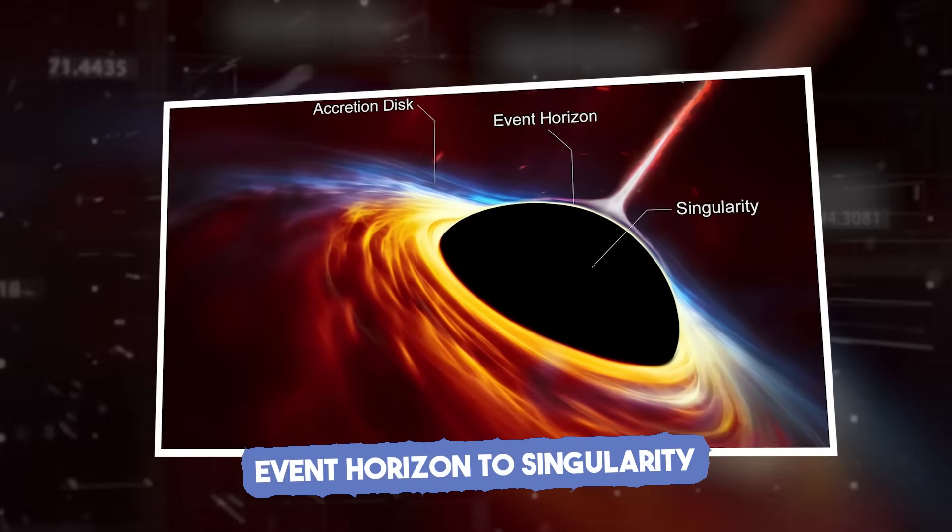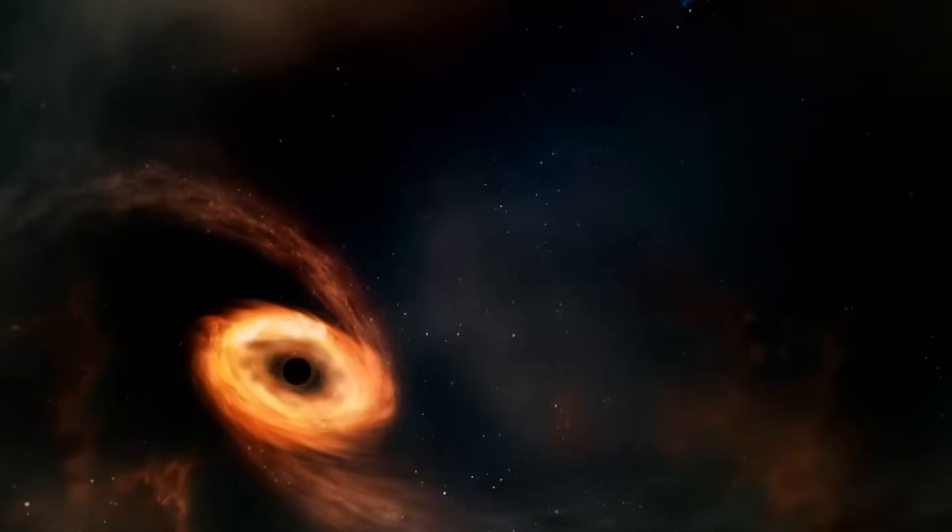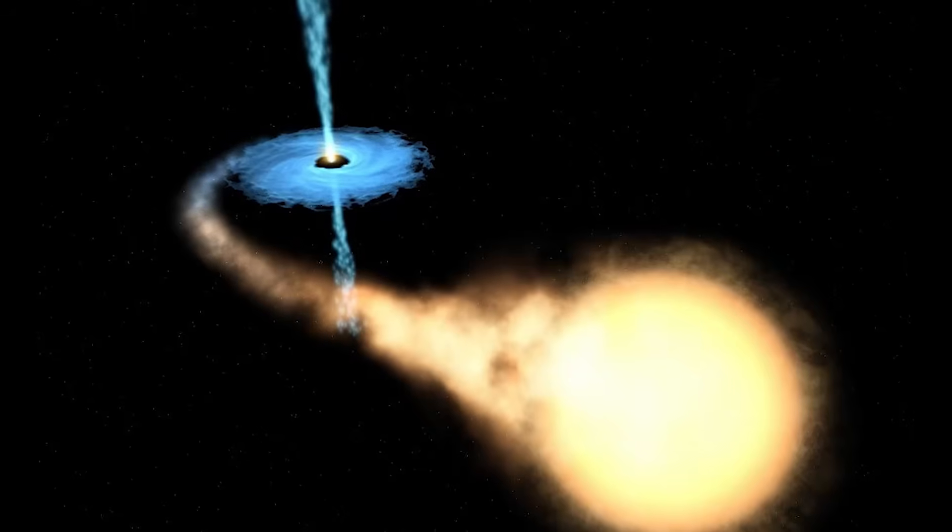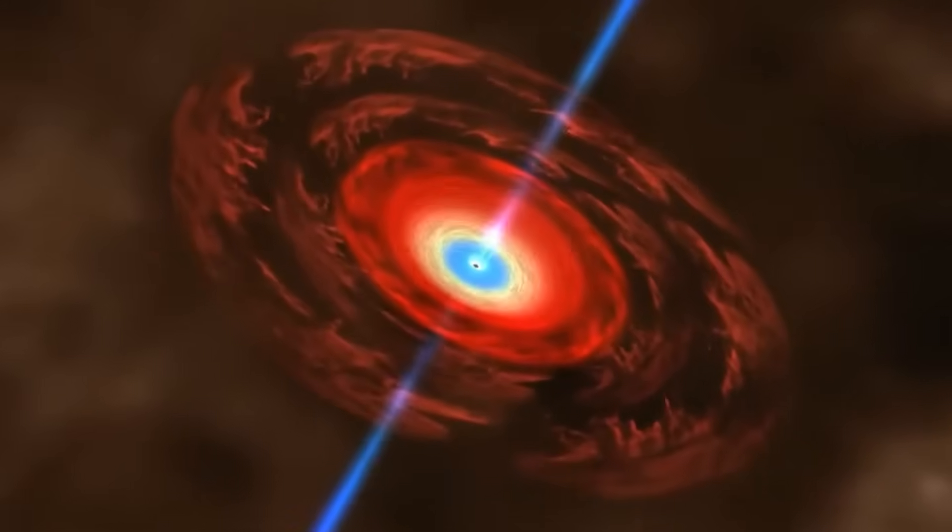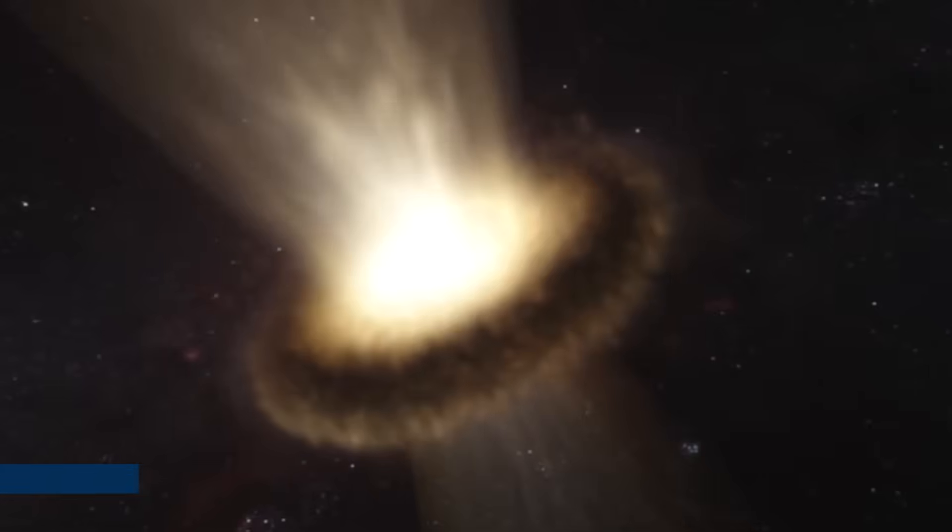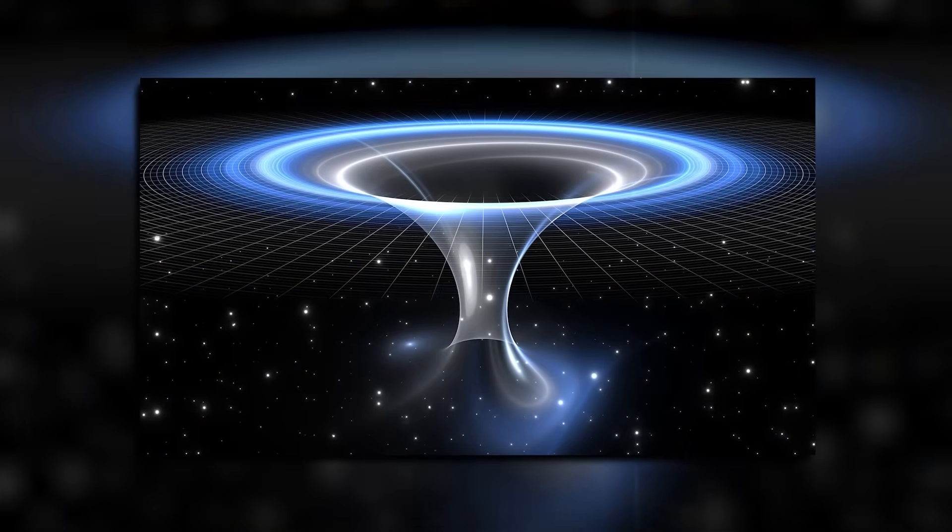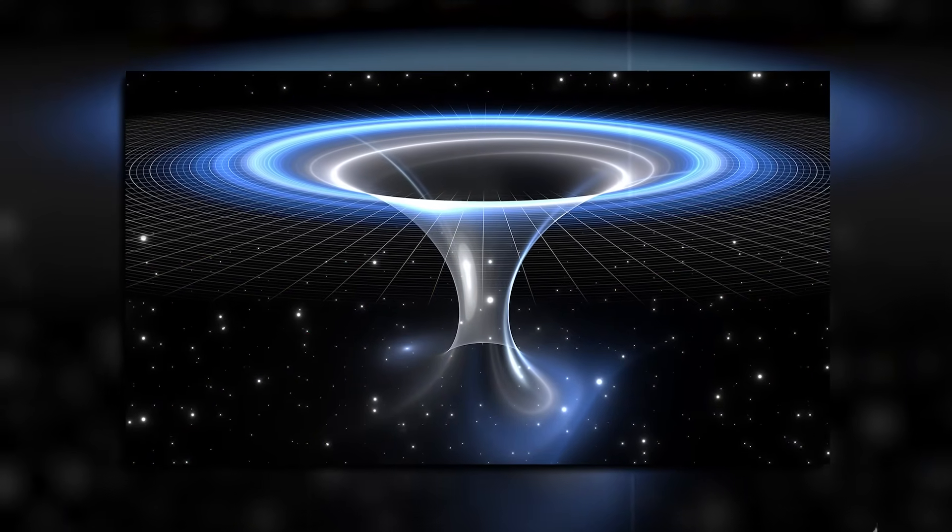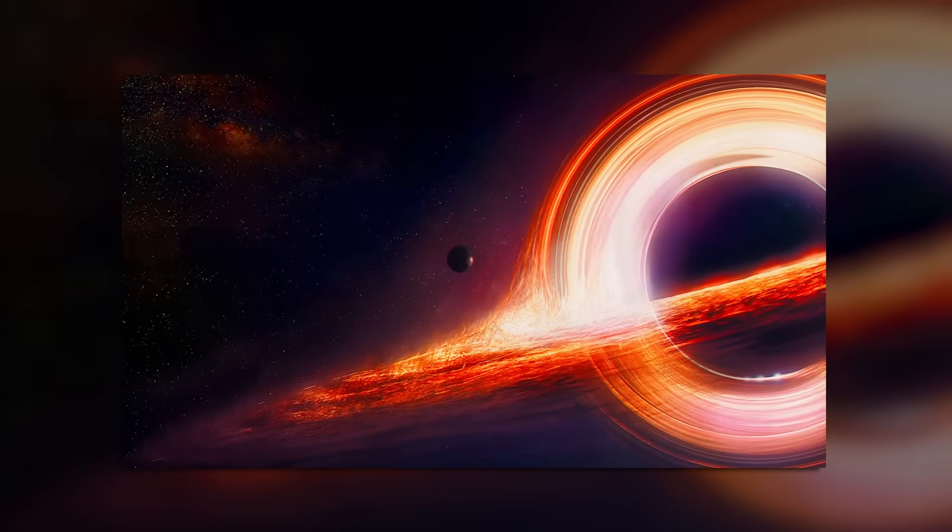Event Horizon to Singularity. Most of what we know about black holes stops at the event horizon, the invisible boundary where things disappear forever. Once something crosses that point, it can't come back. Not even light. That's why we can't see inside. But we're getting better at looking right up to the edge. What lies beyond the event horizon? The best guess is the singularity, a point where matter is crushed into infinite density. Space and time twist so much that our physics simply doesn't work anymore.